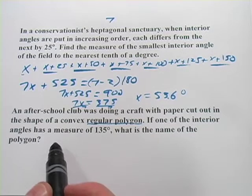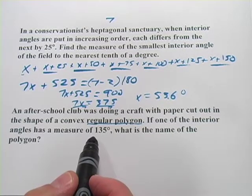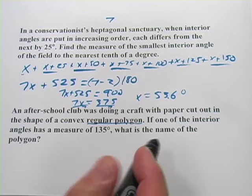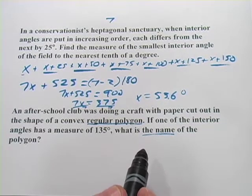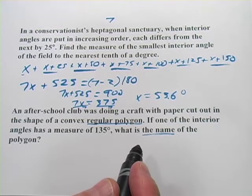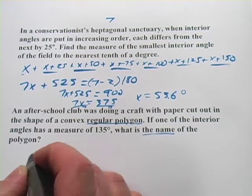If one of the interior angles has a measure of 135 degrees, what is the name of the polygon? When you're looking for the name of a polygon, you really want the number of sides. And we have a formula that deals with number of sides.